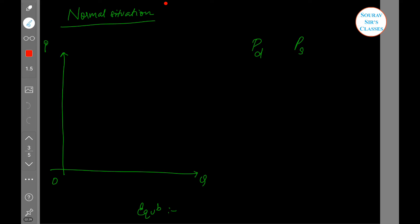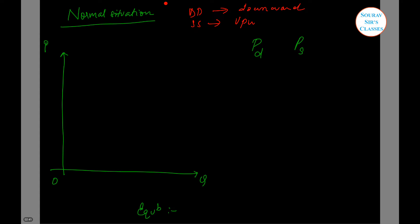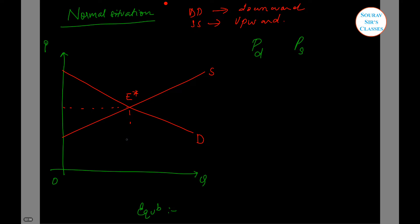In the normal situation, we will draw a demand curve which is downward sloping and a supply curve which is upward sloping — this is what we generally see. So we have the demand curve and the supply curve, and E is the equilibrium where they intersect, giving us Q* and P*.